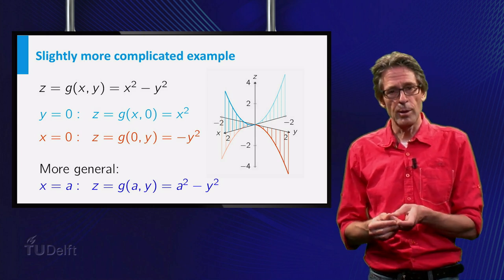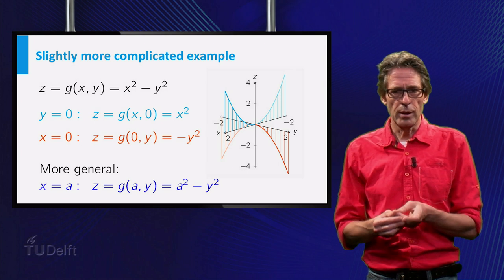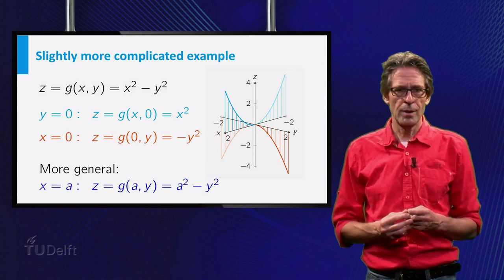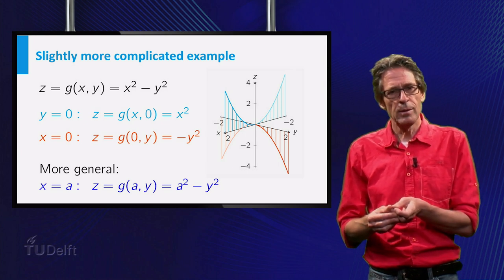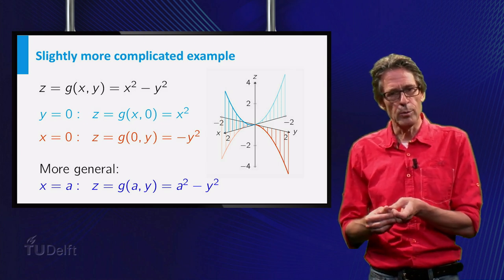This gives again a parabola with maximum value a squared for y equal to zero. So then the whole graph consists of parabolas parallel to the y-z-plane, with maximum values for y equal to zero.